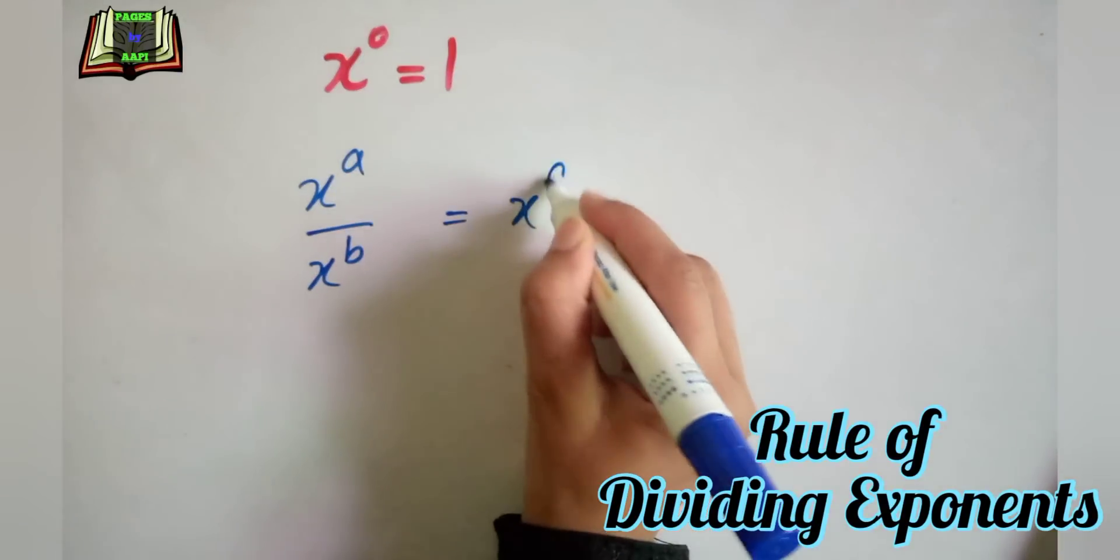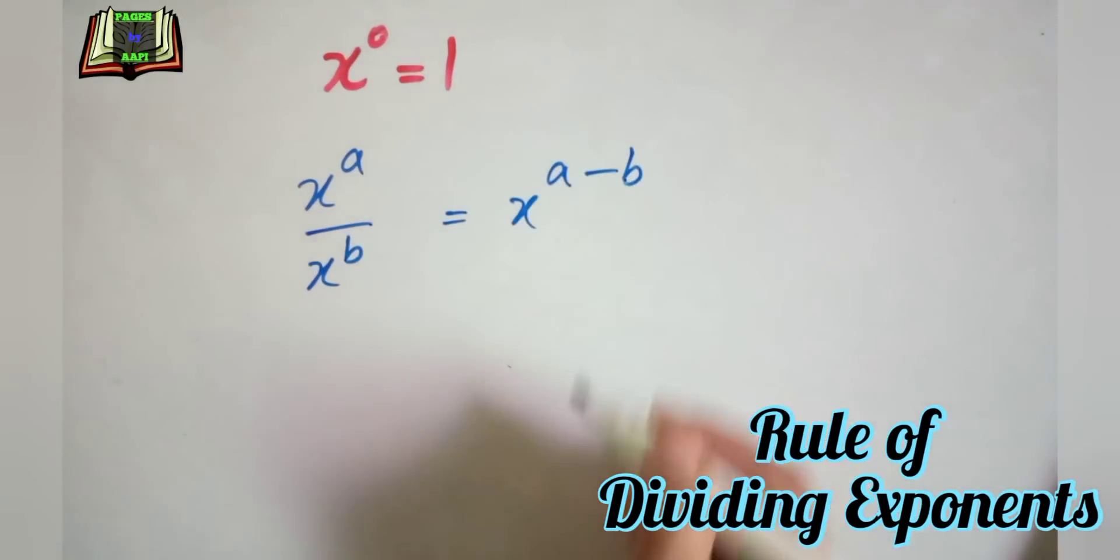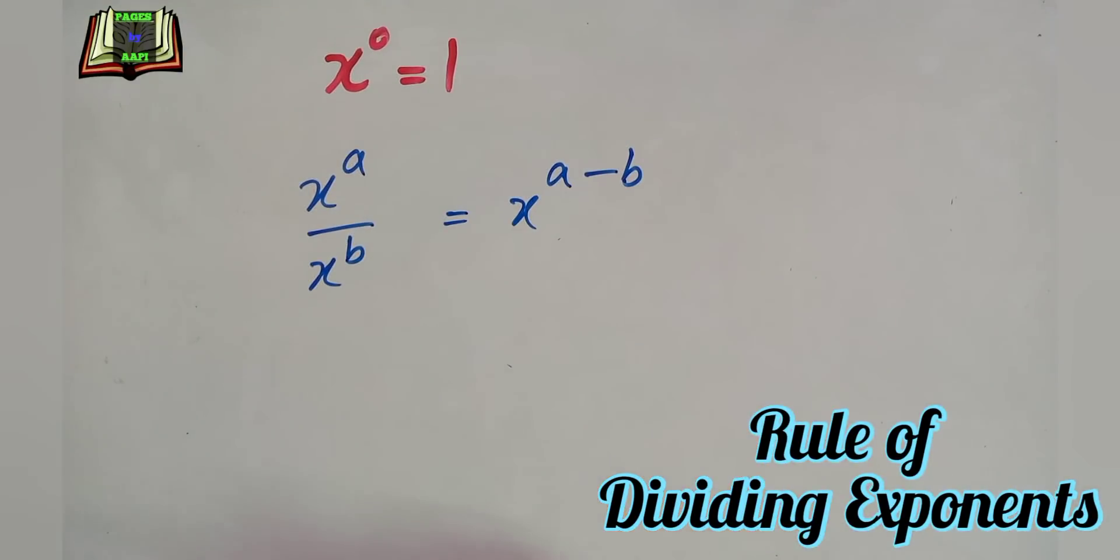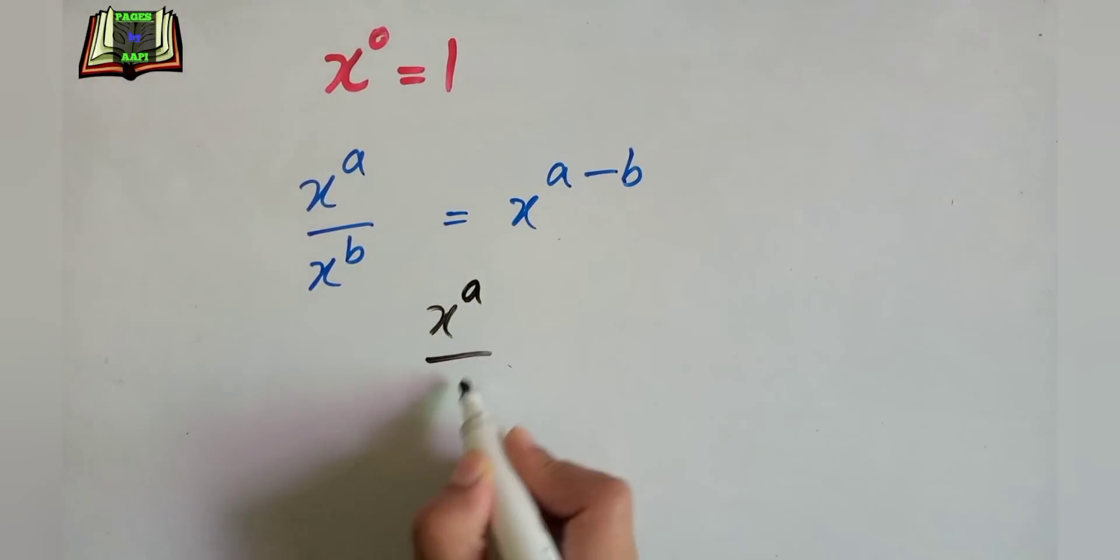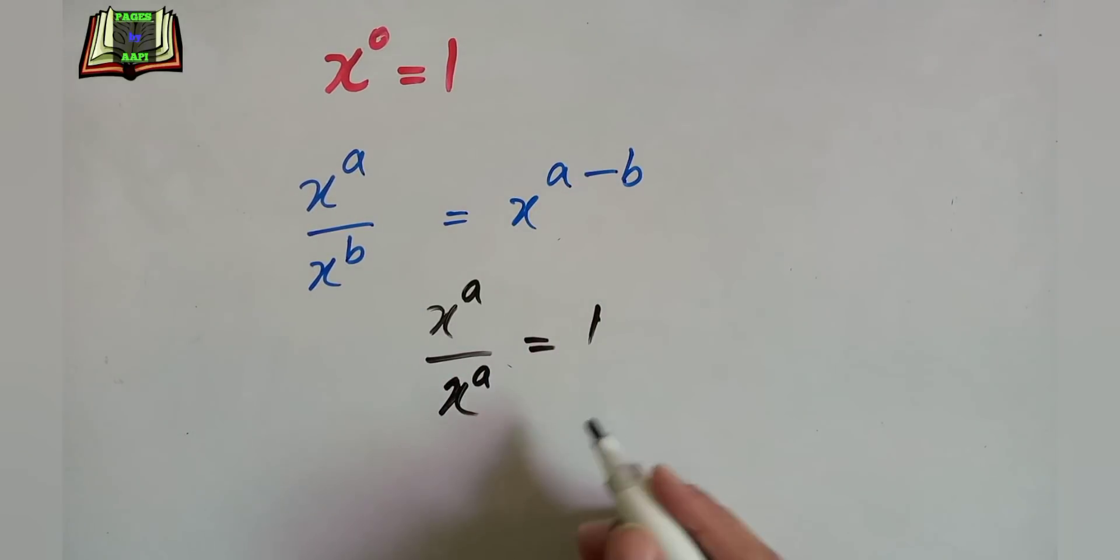We also know that when a number divided by itself, that is equal to 1. Wo exponential number bhi ho sakti hai, aur koi natural number bhi ho sakti hai. Kishi bhi number ko usi number se divide kiya jaye, toh wo 1 ke equal aata hai.